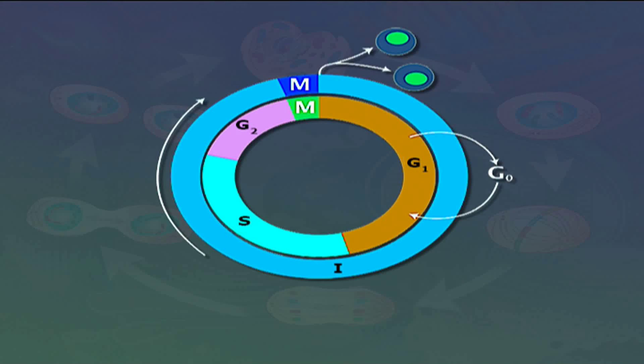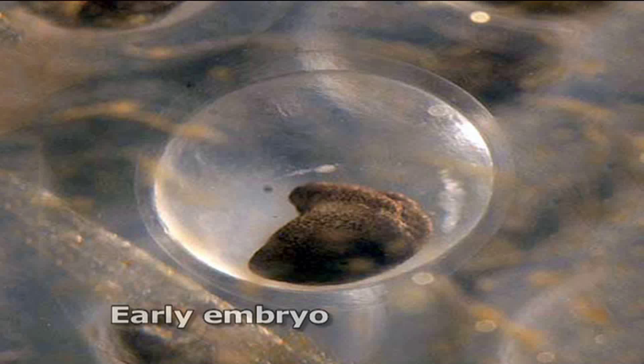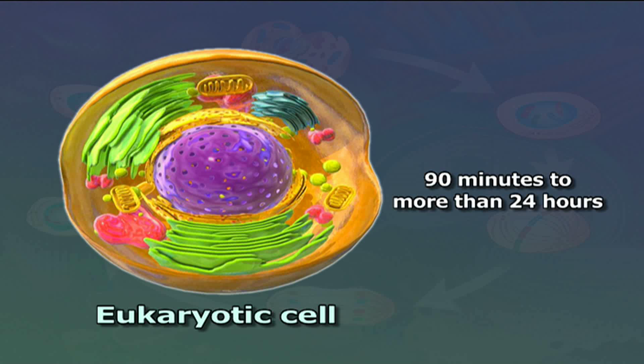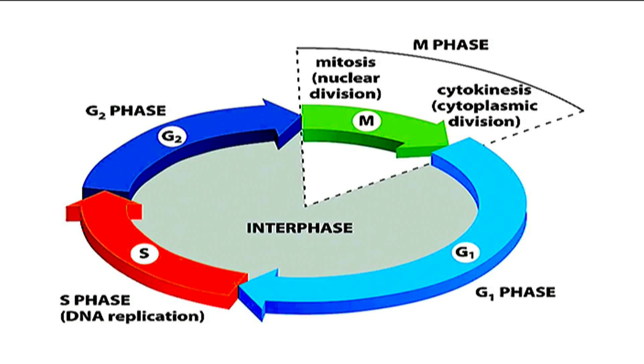Welcome to this lecture on interphase introduction. Most cells divide one or more times during their lifetime, passing through an ordered sequence of events collectively known as the cell cycle. The duration of the cell cycle varies greatly: the shortest occurs in early embryos and can last as little as eight minutes, while growing eukaryotic cells take 90 minutes to more than 24 hours. The eukaryotic cell cycle is divided into two fundamental parts: interphase and mitosis including cytokinesis.